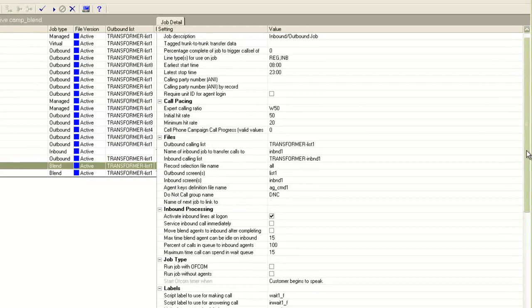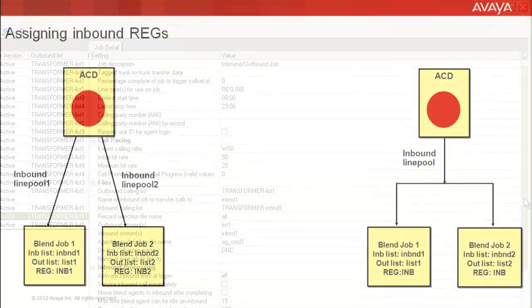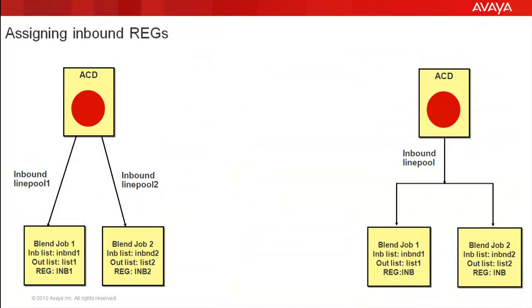Another important setting is the lines or regs that you associate to your blend job. As you can see, for this job it is one outbound and one inbound reg. If you are having more than one blend job running, it is always a good idea to distribute your line pools so that different blend jobs are using different line pools. If you are running multiple blend jobs and want the real-time campaign update to run simultaneously on multiple calling lists, it is best to have the inbound line pools separated on the ACD.